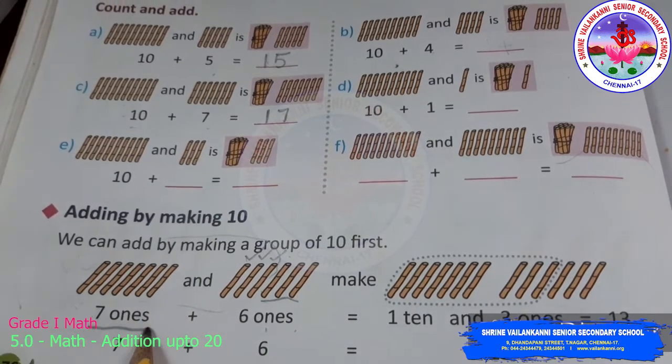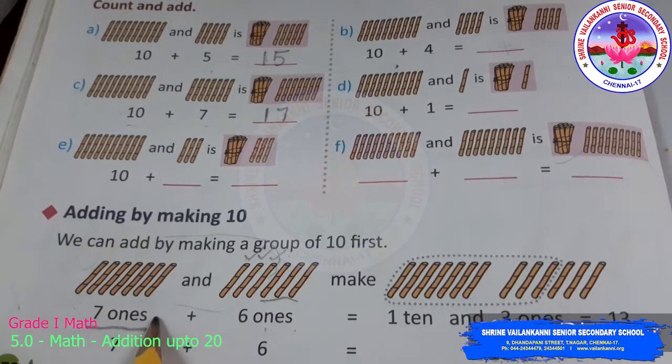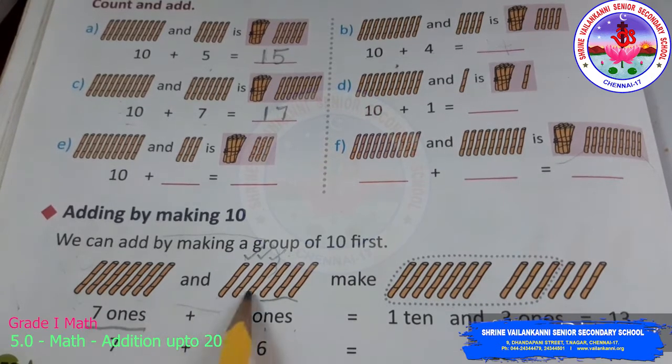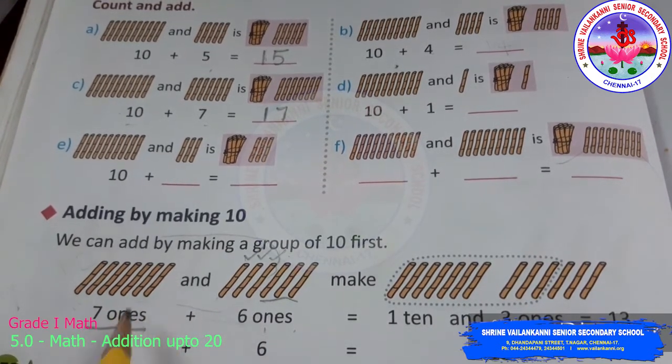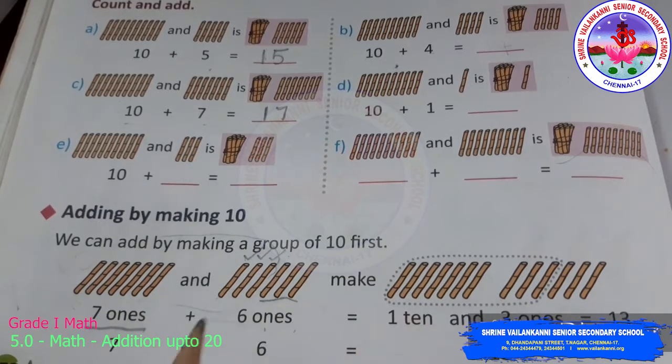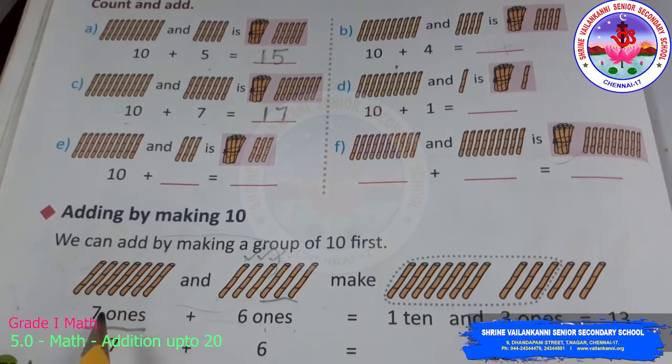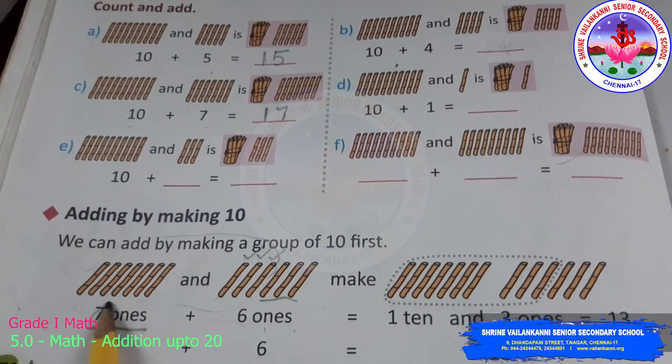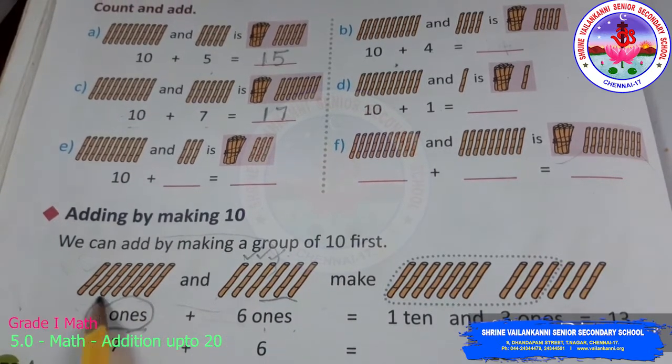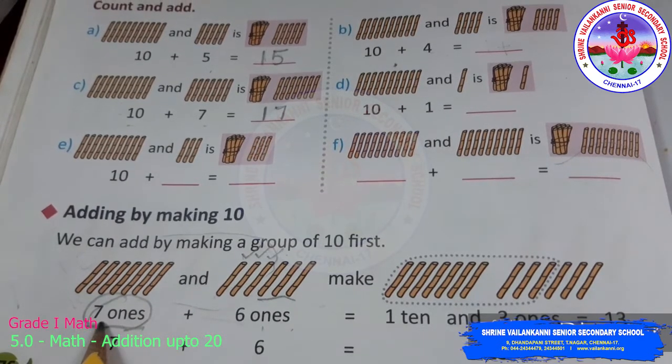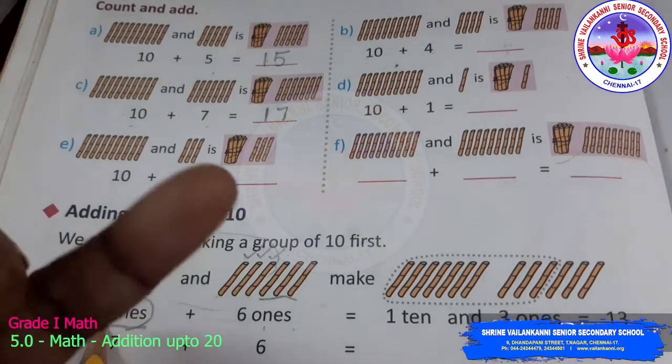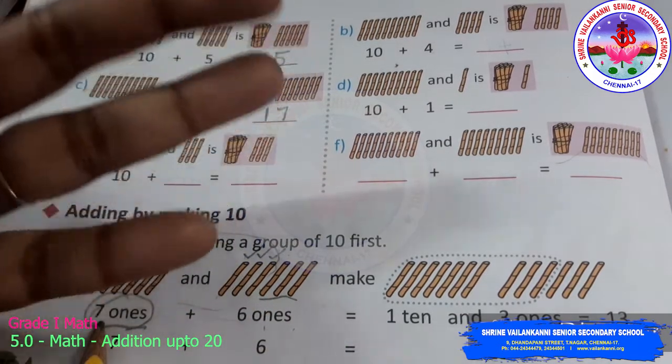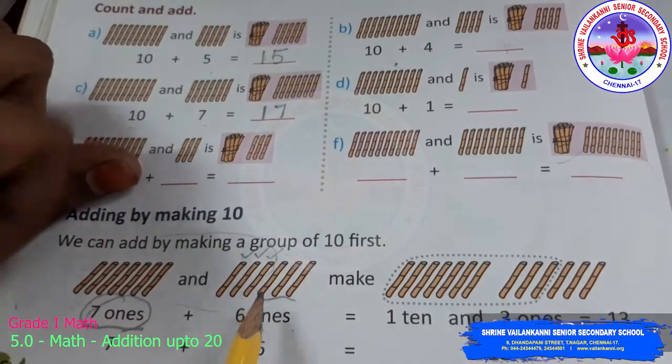You can make the 7 as 10 by picking things from this number and making it a 10 and adding the extra to it and get the answer. So how will you pick the things? You should know how many more you need to make this 10. How many more you need to make 7, 10. How many more will you need after 7, 8, 9, 10. So you need 3 more to make 10.